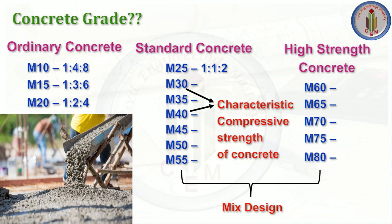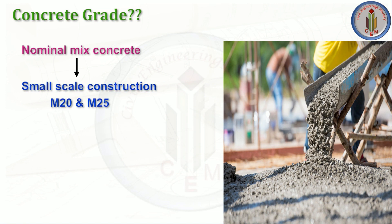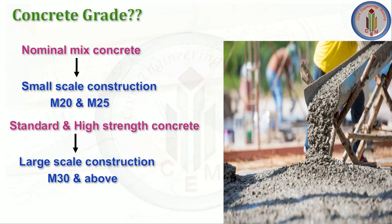M30 and M40 represent characteristic compressive strengths determined by mix design. There are two types of concrete mixes: nominal mix, used for small-scale construction with grades M20 and M25, and design mix (standard and high strength concrete) used for large-scale construction with M30 and above. For small-story buildings, M20 or M25 is used; for high-rise construction, higher loads demand M30 and above.